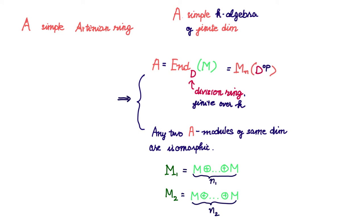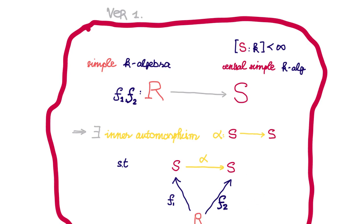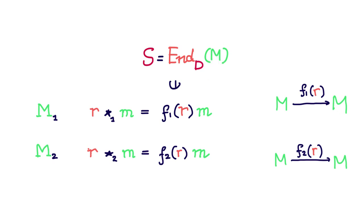Thus modules over simple finite dimensional k-algebras are uniquely determined by their dimension over k. Coming back to our situation, when we view S as the endomorphism ring of M, we get two R-module structures on M. Since R is simple and finite dimensional over k, these two R-modules M1 and M2 must be isomorphic. In other words, there must exist some isomorphism phi which makes the following square commutative for every little r in R. In particular, f2 is just f1 conjugated by phi. The problem though is that we want f2 to be f1 conjugated by something in S, and phi is not necessarily in S, because even though phi is an endomorphism of M, phi does not necessarily commute with D. So how do we ensure that phi actually commutes with D so that it becomes an element of S?